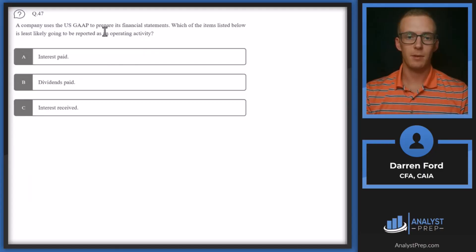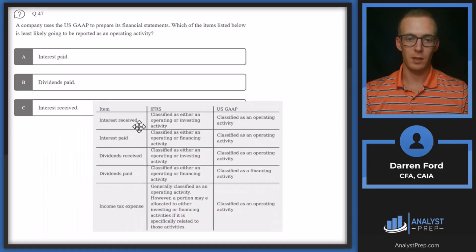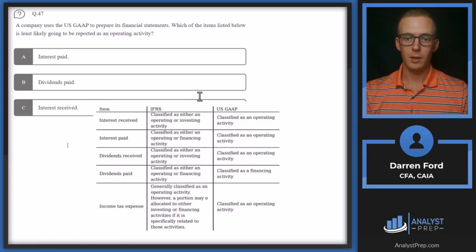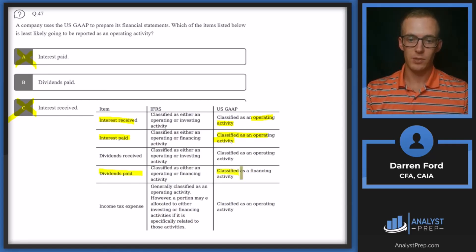Question 47. A company uses US GAAP to prepare its financial statements. Which of the items listed is least likely to be reported as an operating activity? The options are: interest paid, dividends paid, and interest received. Looking at the table: interest received under GAAP is an operating activity, so that won't be our answer. Interest paid is also an operating activity. Dividends paid is a financing activity, which is what we're looking for since we need least likely to be an operating activity. So we go with B — dividends paid.